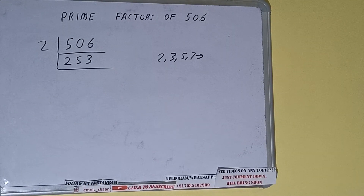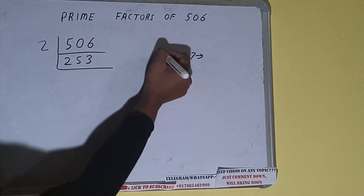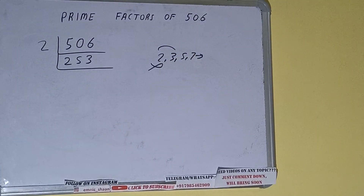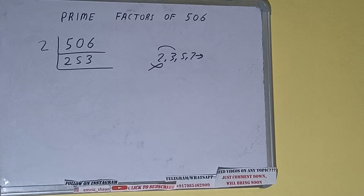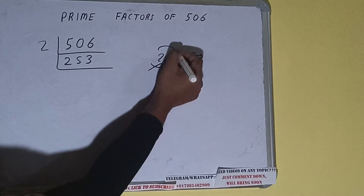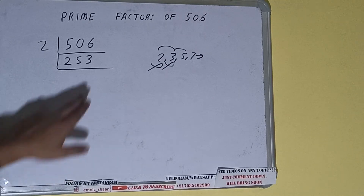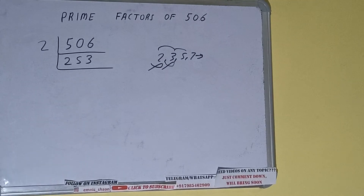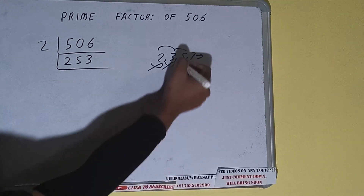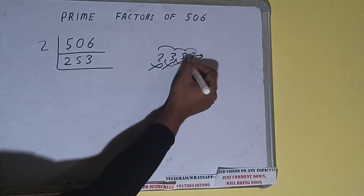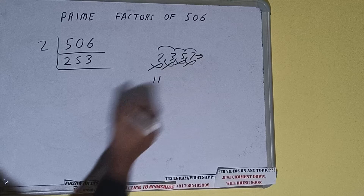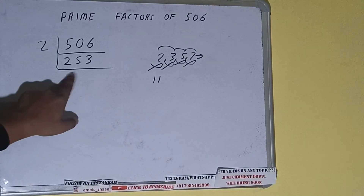253 is not divisible by 2 because it is an odd number. So we'll check with the next lowest prime number, that is 3 — not divisible by 3. Let's check with 5 — the last digit is neither 5 nor 0, so it is not divisible by 5. Let's check with 7 — not divisible by 7 either.